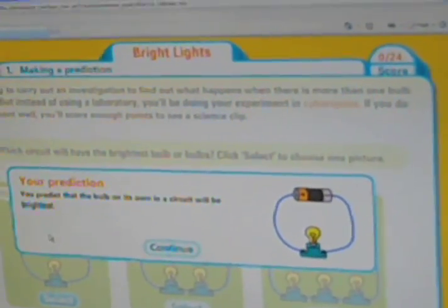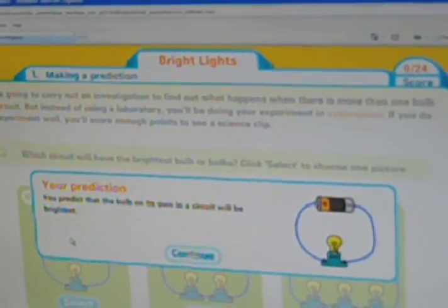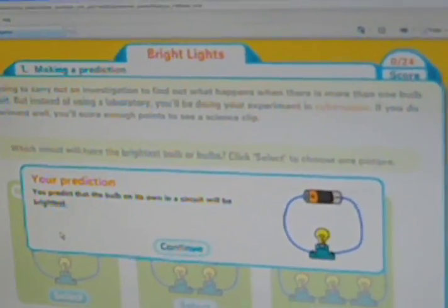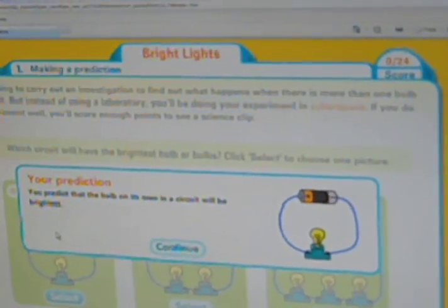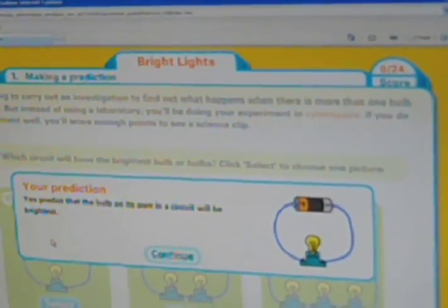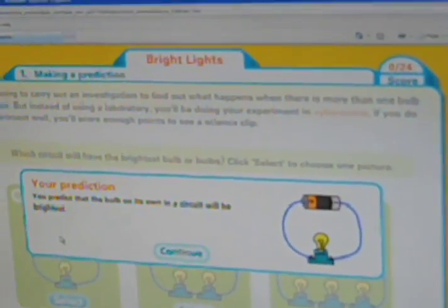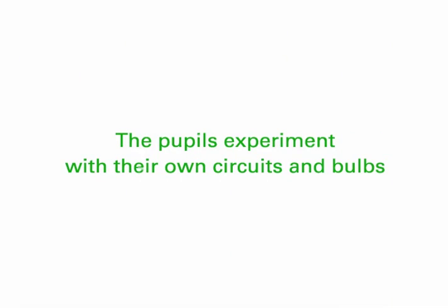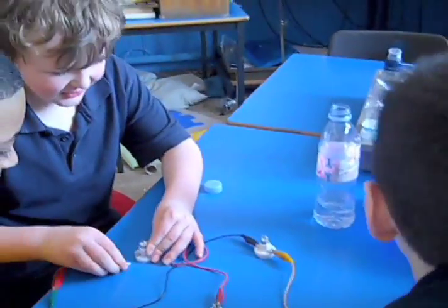We've made a prediction here, together we made a prediction that A was going to be the one that would have a bright bulb. It says, in your prediction, you predict that the bulb on its own in a circuit will be the brightest.